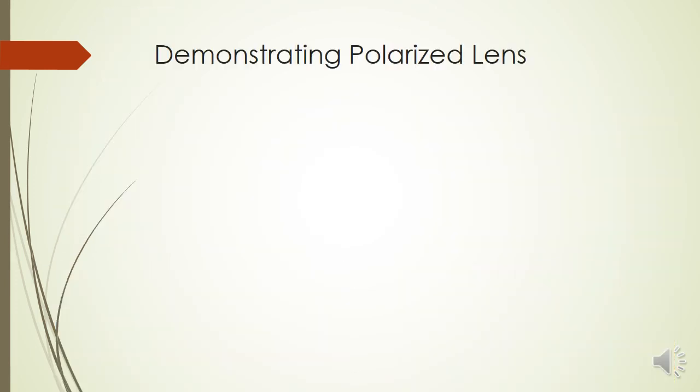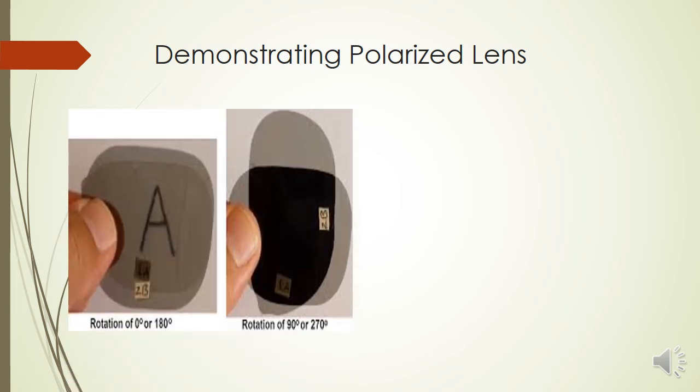Now, how to demonstrate a polarized lens? How do I understand if my lenses are polaroid or non-polaroid? The simplest test which can be done is that when two lenses are kept at the same angle, parallel to each other, they will transmit the complete amount of light. But the moment they are rotated and kept perpendicular to one another, such that one is at 90 and the other is at 180, that will give you complete blockage of light.